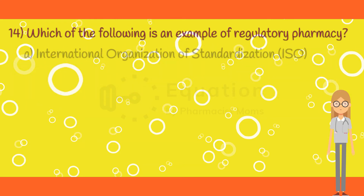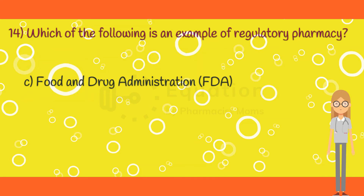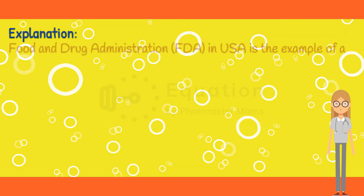Question 14. Which of the following is an example of regulatory pharmacy? Option A: International Organization of Standardization or ISO. Option B: World Health Organization or WHO. Option C: Food and Drug Administration or FDA. Option D: All of the above options. The correct answer is option C. Food and Drug Administration, that is FDA, in USA, is the example of a regulatory pharmacy.